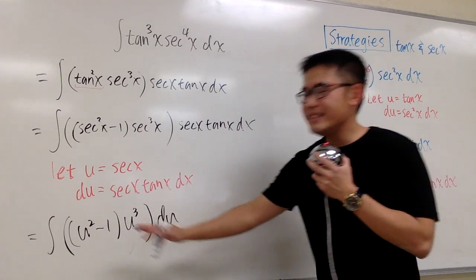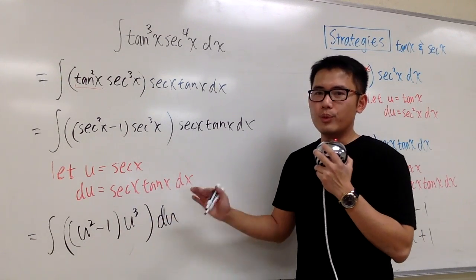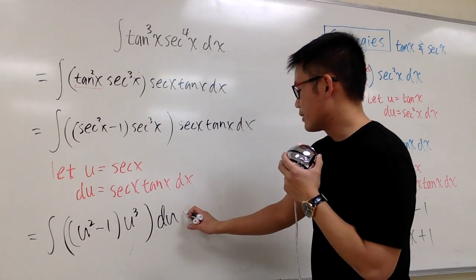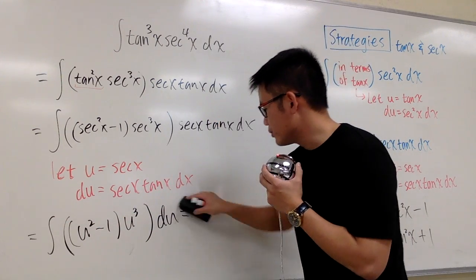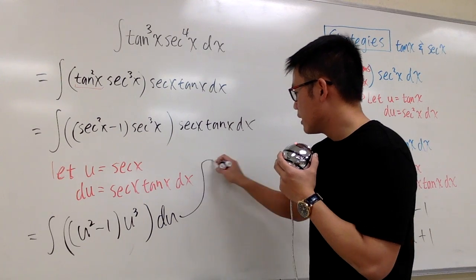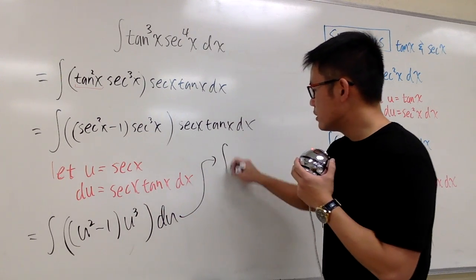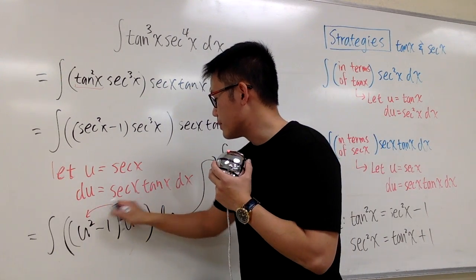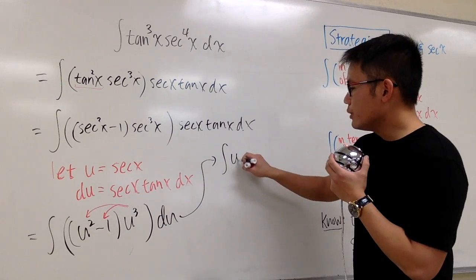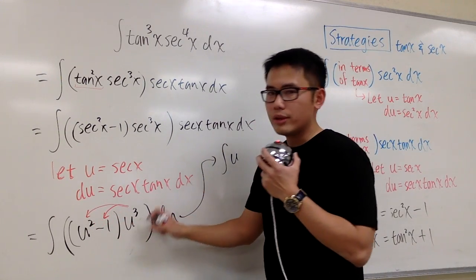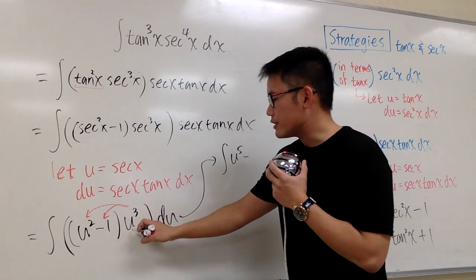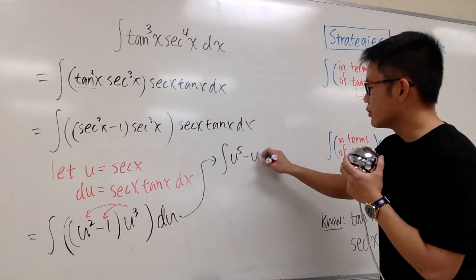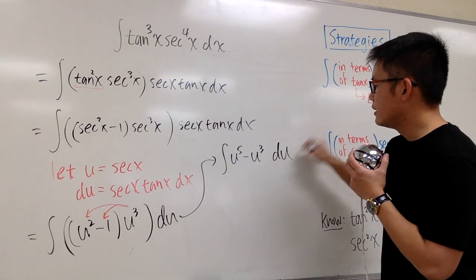And now, we can easily integrate this in the u world. I will put it down right here. This is the integral. I have to distribute the u to the 3rd power here. U to the 2nd power times u to the 3rd power, that's u to the 5th power. And then minus u to the 3rd power times 1. So u to the 3rd power du.